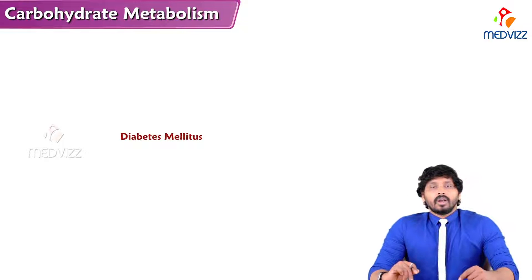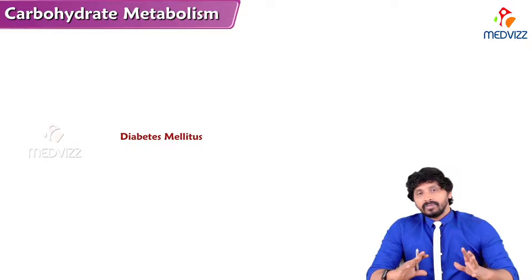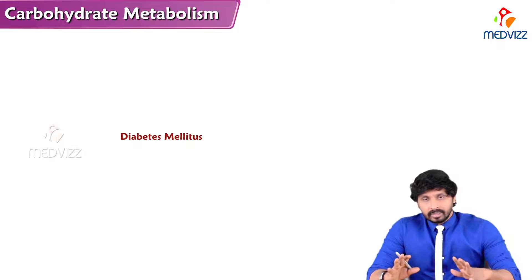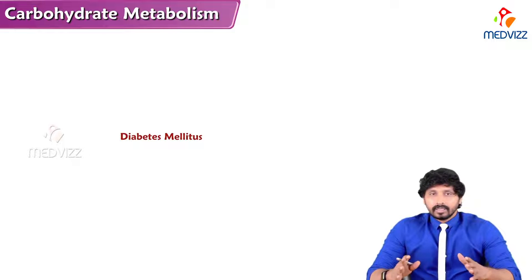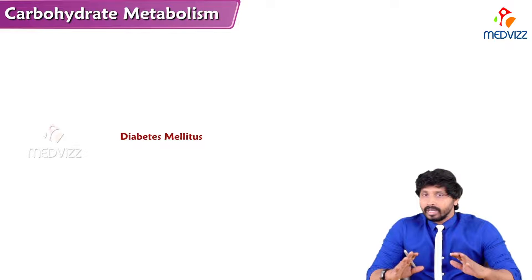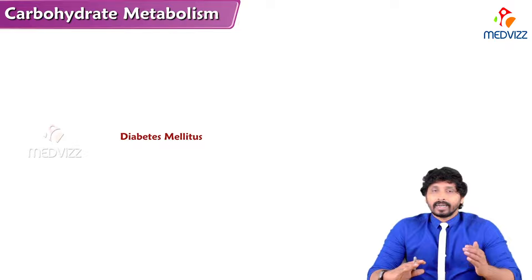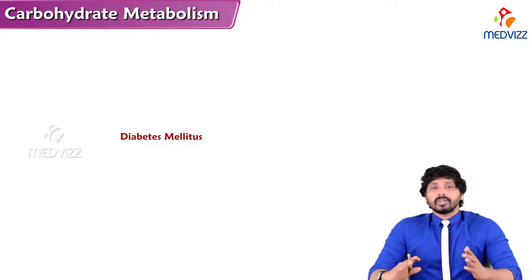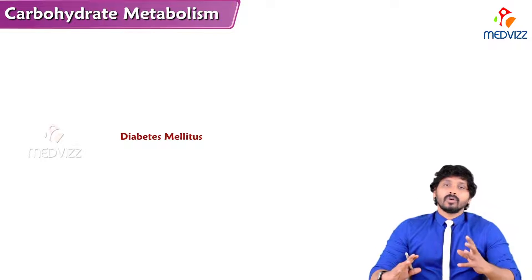Hello everyone, Dr. Suresh here. In this video we will be talking in detail about diabetes mellitus. In our previous videos we discussed carbohydrate metabolism, the pathways, blood glucose regulation, and the factors involved. We also covered disturbances in blood glucose homeostasis and types of glycosurias — alimentary glycosuria, renal glycosuria, and diabetic glycosuria. To understand diabetic glycosuria, we will first look at the details of diabetes mellitus.